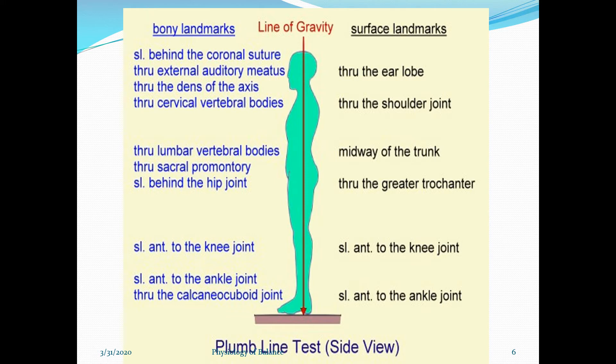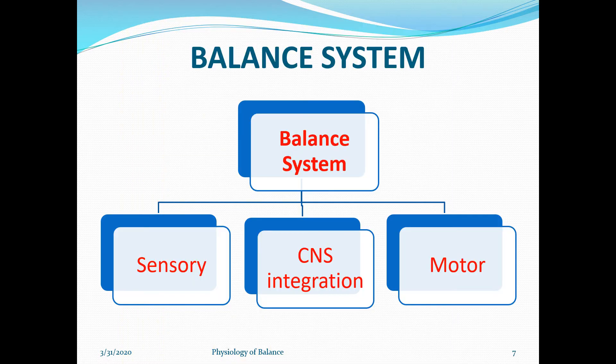So why is it important? This defines how the alignment of the body will affect other segments and body parts. The balance system comprises three things: first is sensory, second is CNS integration, and third is motor. The most important parts we are concerned with for now are motor and sensory.